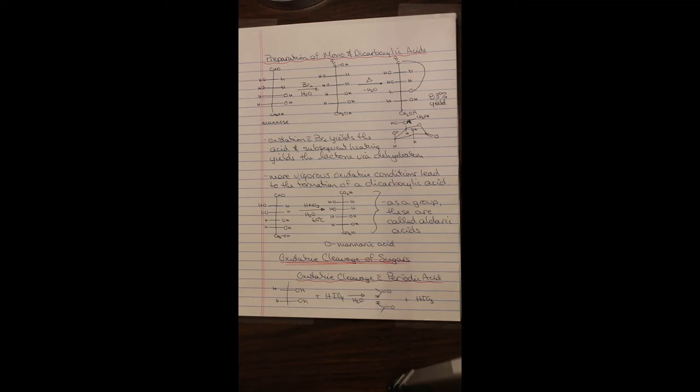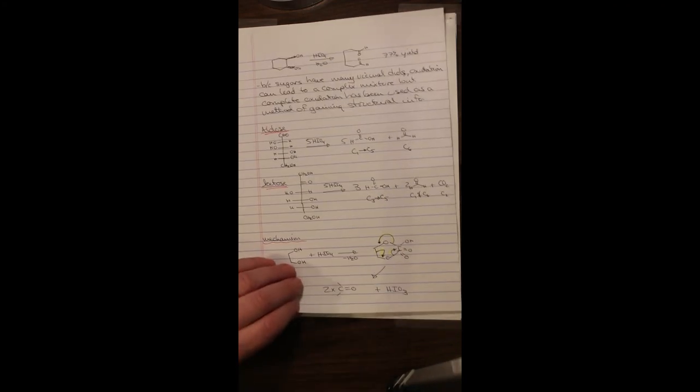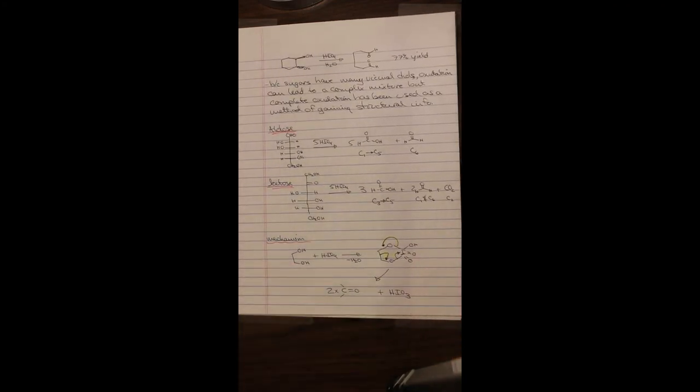Oxidative cleavage of sugars. Oxidative cleavage with periodic acid. Vicinal dialcohols react with periodic acid, and it cleaves the carbon-carbon bond to create two aldehydes. This reaction is illustrated here with this vicinal dialcohol, this cyclic one. We can cleave and open this ring to create a dialdehyde. This works very well, 77% yield. Because sugars have many vicinal diols, oxidation can lead to complex mixtures. But we learned over the years how to identify the components of these mixtures. And this can tell us how long our carbon chain is.